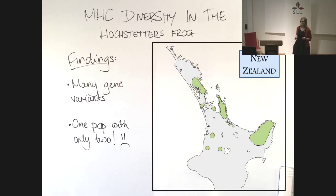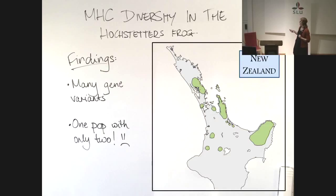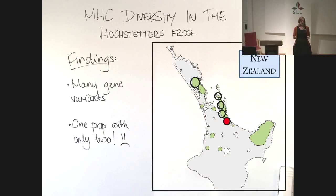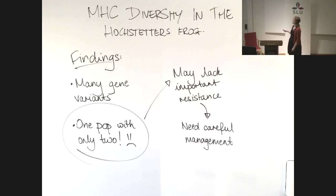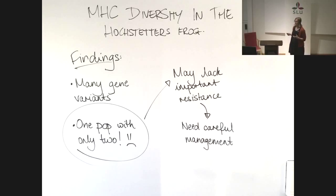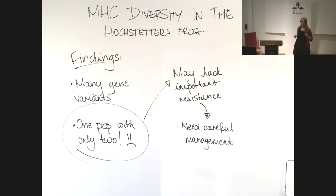So what did we find? We found lots of MHC gene variants. However, we identified one population that had only two MHC variants. That's bad. This may mean that this population may not have those important resistance alleles or variants that are important for survival into the future. So this population will need careful management.